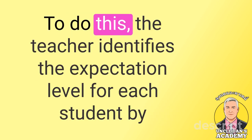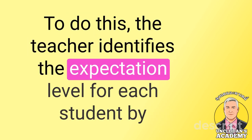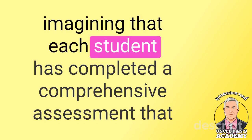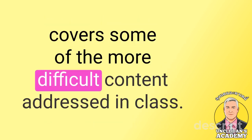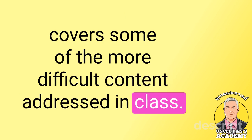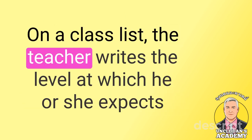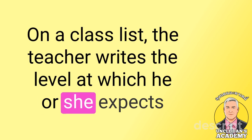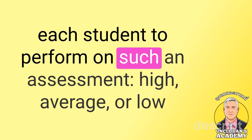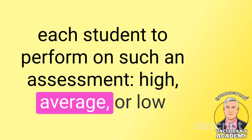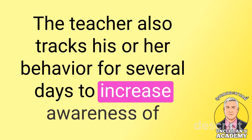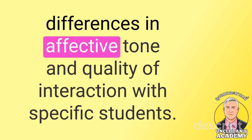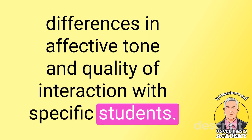The chapter emphasizes the importance of identifying pre-existing differences in student expectations and treating all students equally. To do this, the teacher identifies the expectation level for each student by imagining that each student has completed a comprehensive assessment that covers some of the more difficult content addressed in class. On a class list, the teacher writes the level at which he or she expects the student to perform on such an assessment — high, average, or low. The teacher also tracks his or her behavior for several days to increase awareness of differences in affective tone and quality of interaction with specific students.